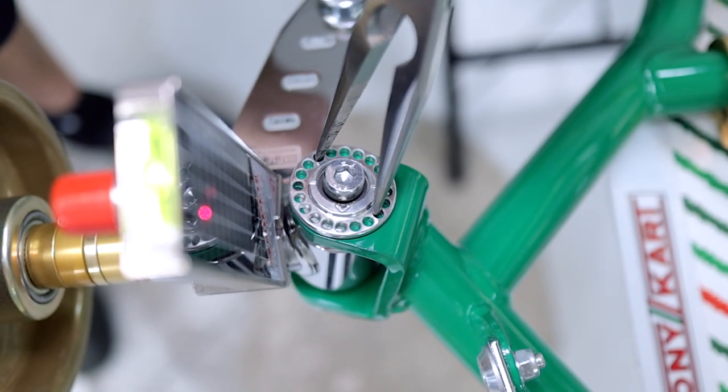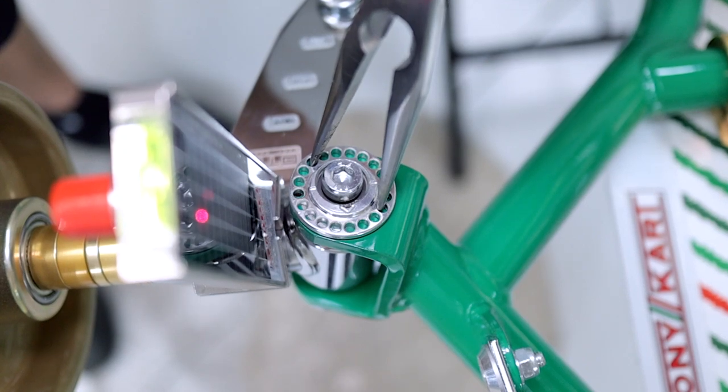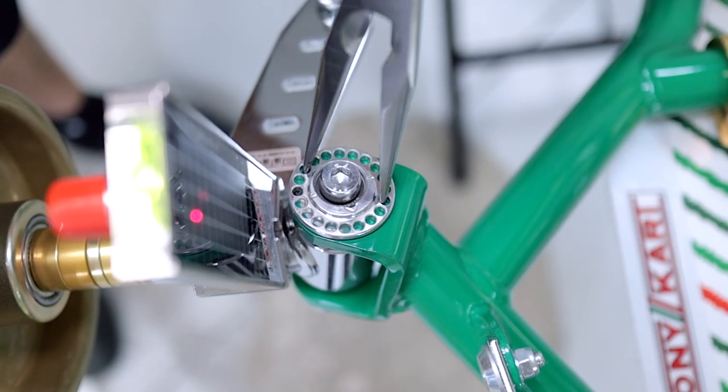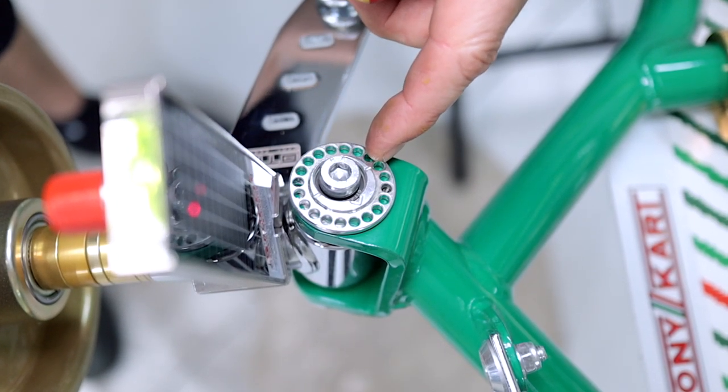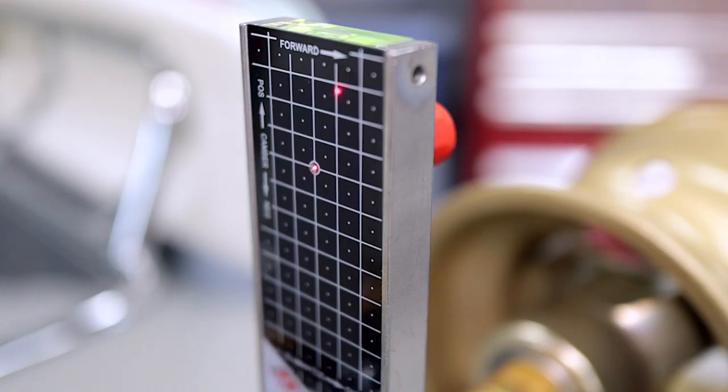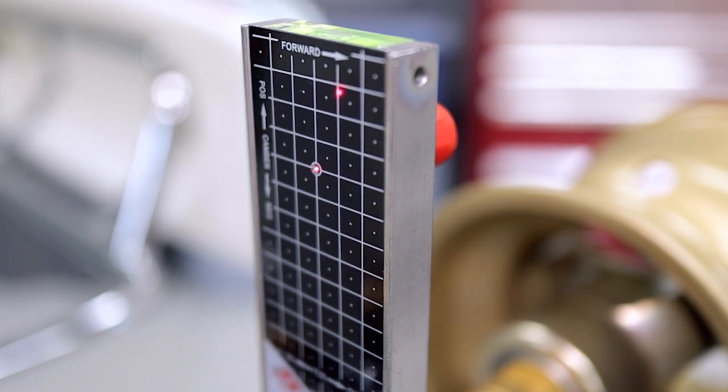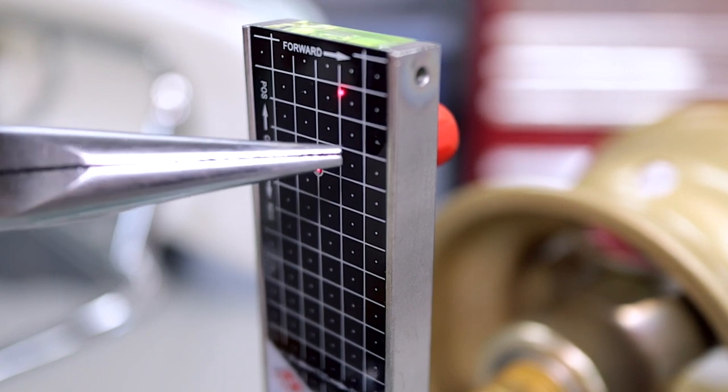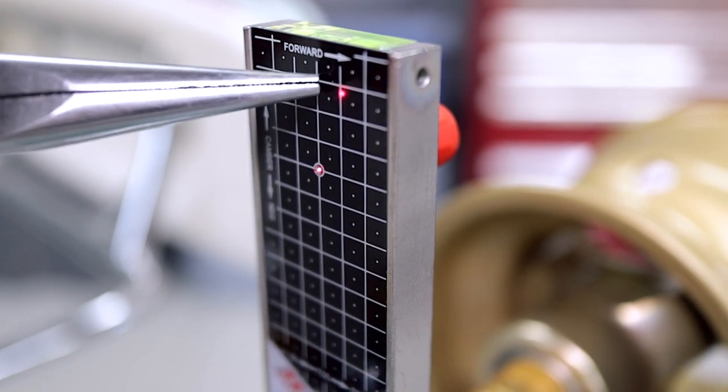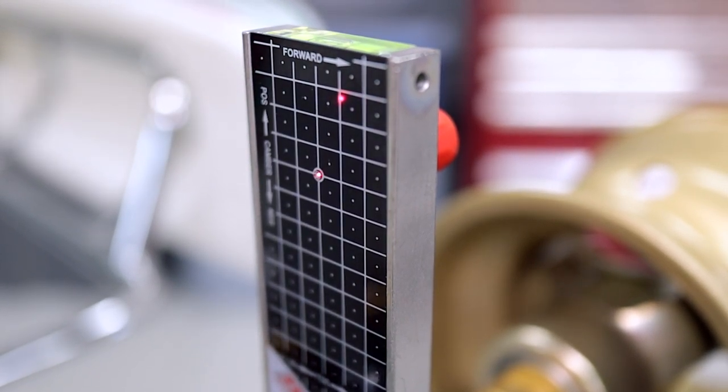in an anti-clockwise direction over on the engine side. One, two holes. So we've gone from this hole to this hole. So that's given us positive camber. Because you can see that the laser has moved from here all the way up to here. So we've increased positive camber.